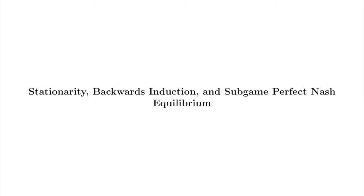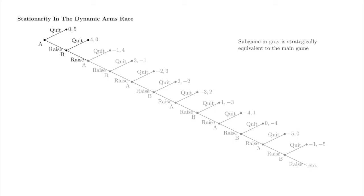In this slide, the subgame starting from A's second move is shown in gray. The gray subgame is strategically equivalent to the main game. Payoffs are simply reduced by one at every terminal node to reflect the fact that the gray subgame follows one raise by A and another raise by B. Since all payoffs are reduced by one relative to the main game, the game is strategically equivalent. The evolution of payoffs in the main game and the gray subgame follows the same pattern.